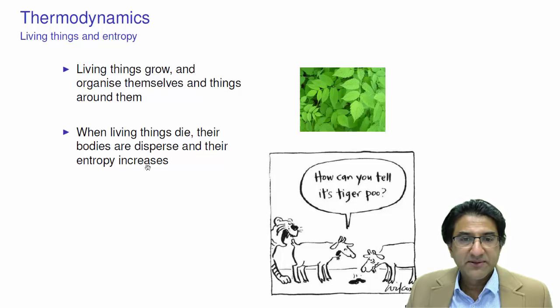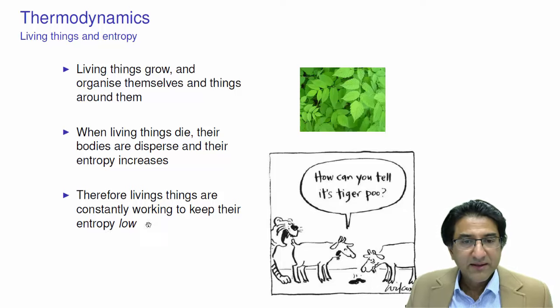Now, when living things die, their bodies are dispersed and entropy increases. Obviously, when you die, you go into the ground and worms eat you and your pieces of matter that used to make you up get dispersed. Or maybe you get cremated. Then you definitely get your entropy goes to hell.